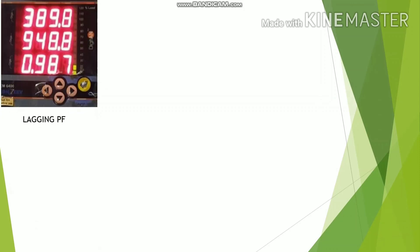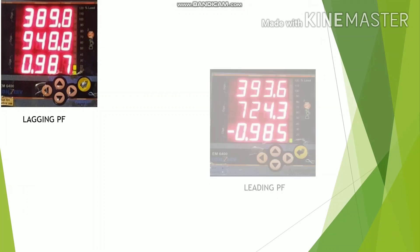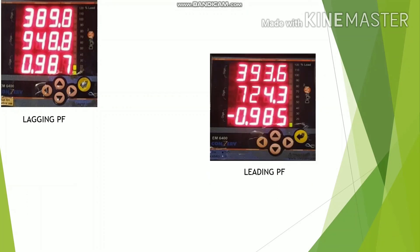Now I will show you some examples of leading, lagging, and unity power factor. The first one is lagging power factor. In this energy meter, it is showing lagging PF, which is less than unity. That means the inductive load inside the system increases. Second one is the leading power factor. Leading power factor is denoted with a negative sign. That means capacitive load inside the system increases.